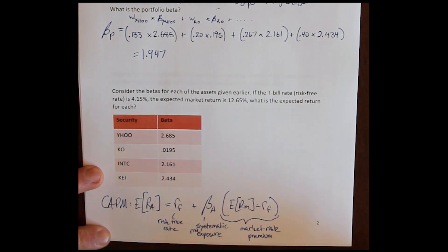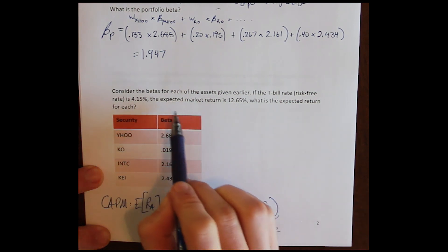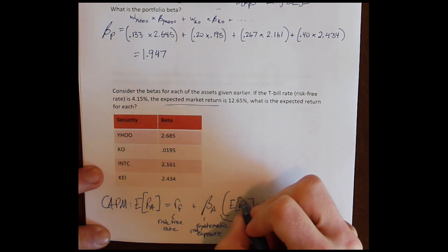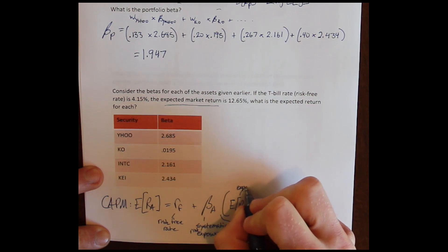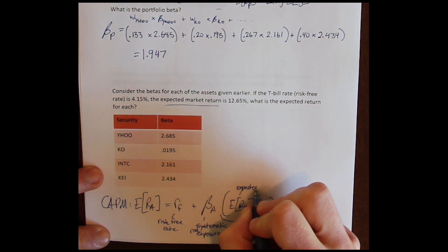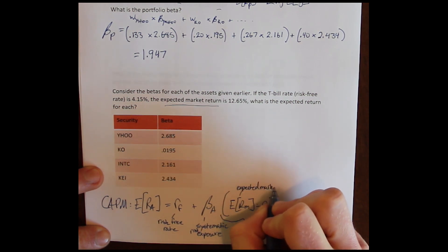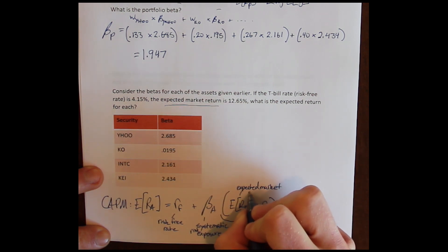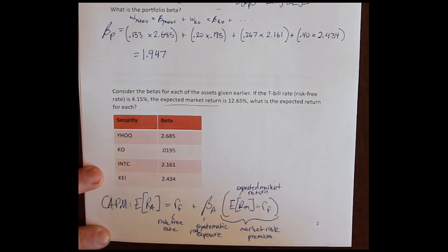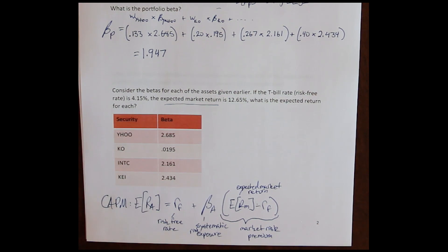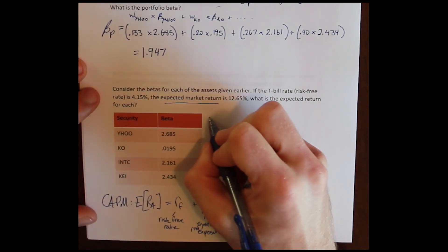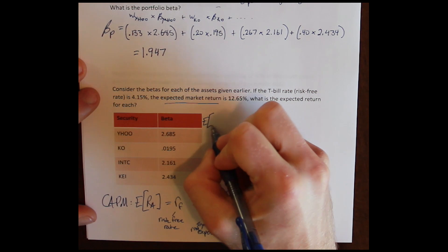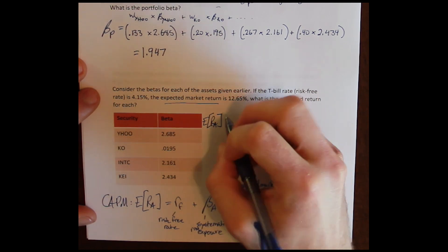We are not given the market risk premium directly — we're given the expected market return. So the market risk premium is the expected return on the market minus the risk-free rate, and we've got to do that calculation on our own. We'll use the CAPM for each of these assets.